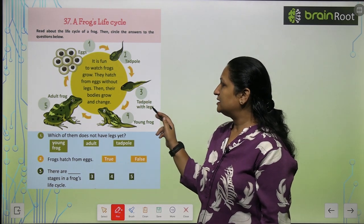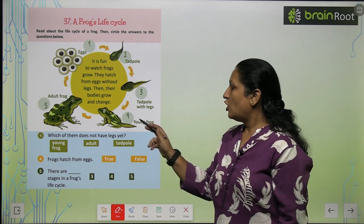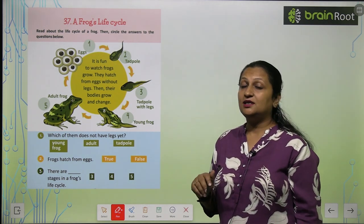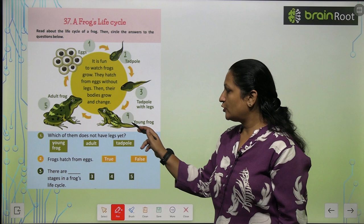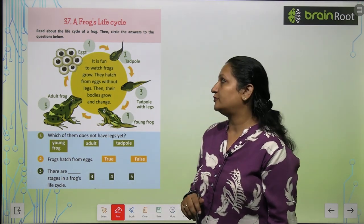Then, tadpole with legs. The tadpole's legs develop slowly. And then it becomes a young frog, and then it develops into an adult frog.